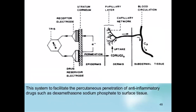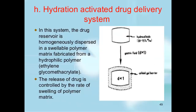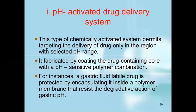This system facilitates the percutaneous permeation of anti-inflammatory drugs such as sodium phosphate to the target tissue. Next is the hydration-activated drug delivery system. In this system, the drug reservoir is homogeneously dispersed in a swellable polymer matrix fabricated from a hydrophilic polymer such as ethylene glycol methacrylate. The release of drug is controlled by the rate of swelling of the polymer matrix. This type of chemically activated system permits targeted delivery of drugs only in the region with a selected pH range. It is fabricated by coating the drug-containing core with a pH-sensitive polymer combination.